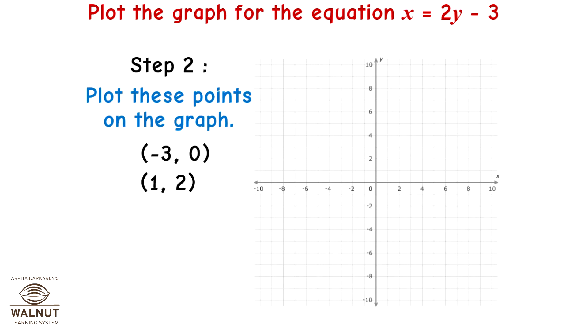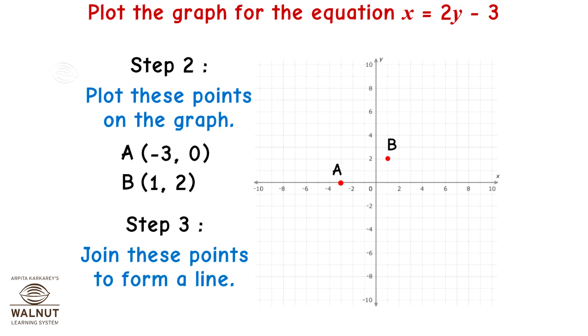Step 2: Plot these points on the graph — Point A (-3, 0) and Point B (1, 2). Step 3: Join these points to form a line.